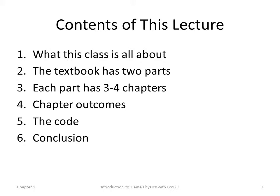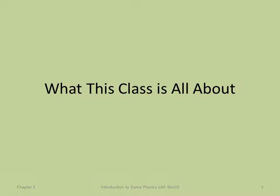The book has two parts. Each part has about three or four chapters. There are chapter outcomes — I'll talk about those, so you know what you would expect to know after reading and understanding each chapter. We'll also talk a little bit about the code, which you can download online, and then finish with a quick conclusion.